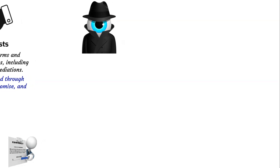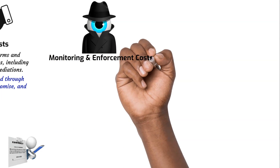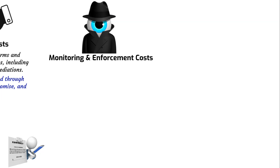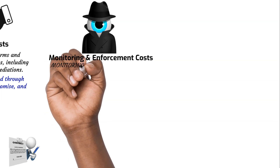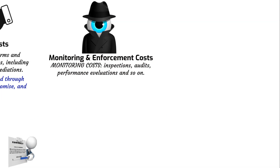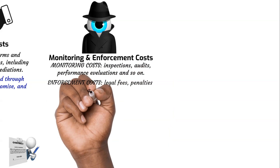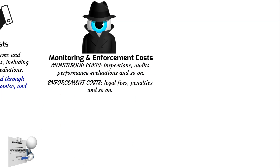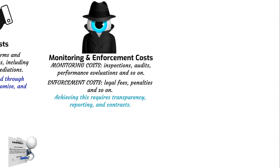Monitoring and enforcement costs are the expenses involved in ensuring that all parties in a transaction fulfill their contractual obligations and act in the best interests of the organization. These costs arise from the need to supervise and oversee the performance of agreements, contracts, or partnerships. The monitoring aspect may involve regular audits, inspections, or performance evaluations to detect deviations from agreed-upon terms. Enforcement costs may arise when parties need to take action to ensure compliance, which may include legal fees or penalties. Reducing these costs requires transparent, well-defined contractual terms and a reliable system for tracking performance.